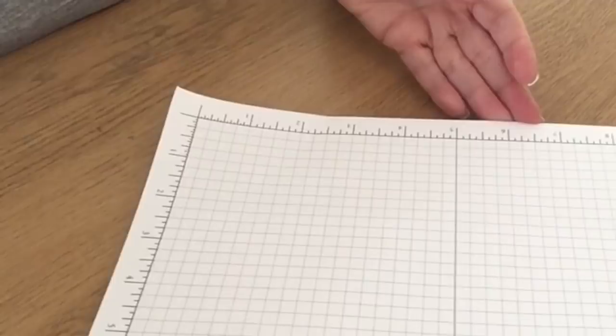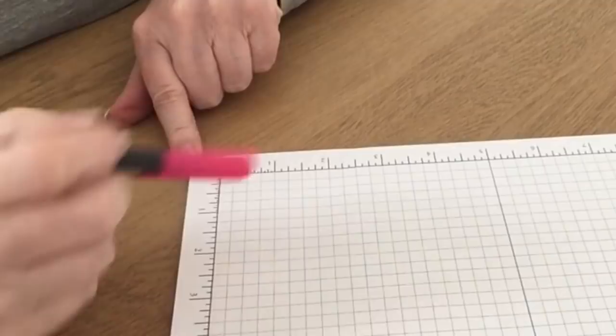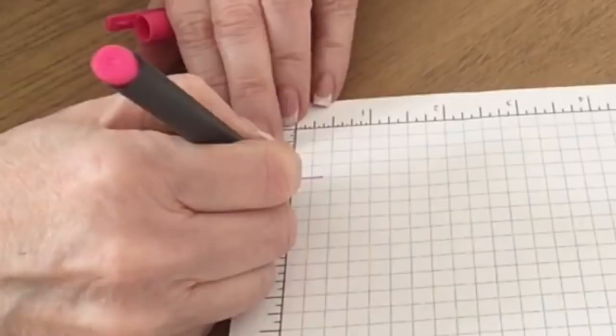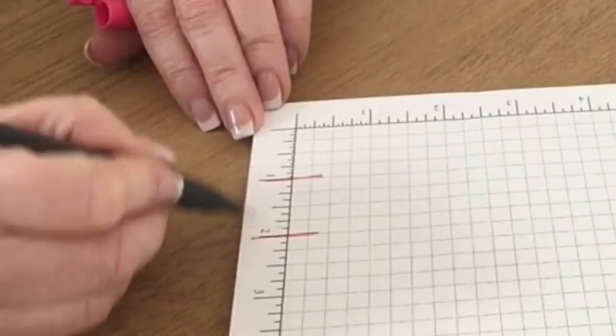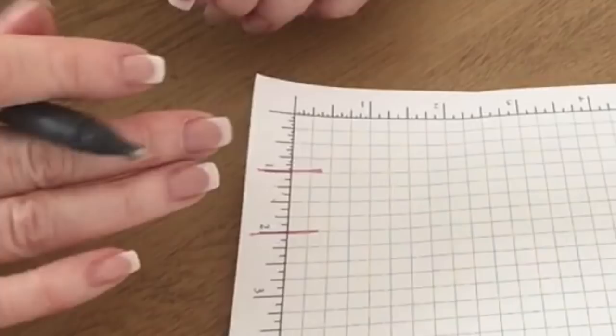Now on my pad here, this is a Stampin' Up grid pad. Again you'll see if you look between the inch marks which I'll try and highlight you've got one two three four five six seven eight so again this is an eighths ruler which is good for when you're making 3D projects like boxes and bags and that kind of thing.